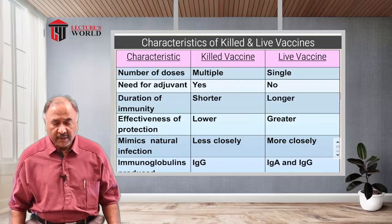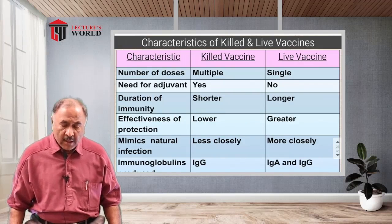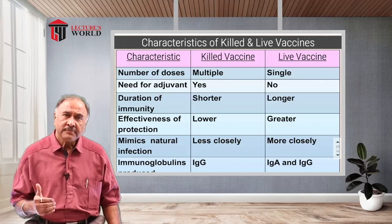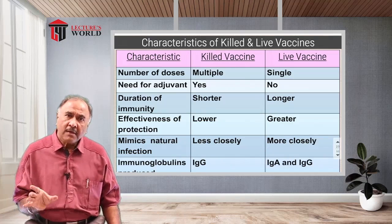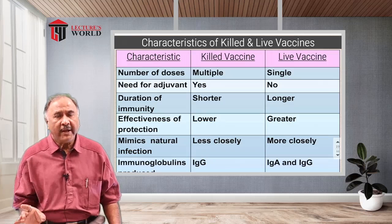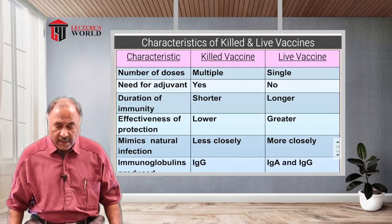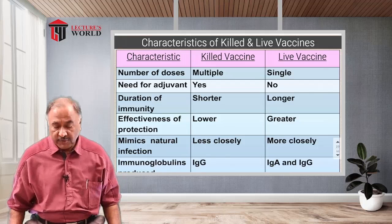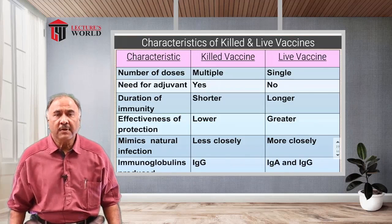Now let us compare the characteristics of killed and live vaccines point by point — this will make the advantages and disadvantages very clear. First, the number of doses: in the case of killed vaccines, multiple doses are required. In the case of live vaccines, usually a single dose will suffice.